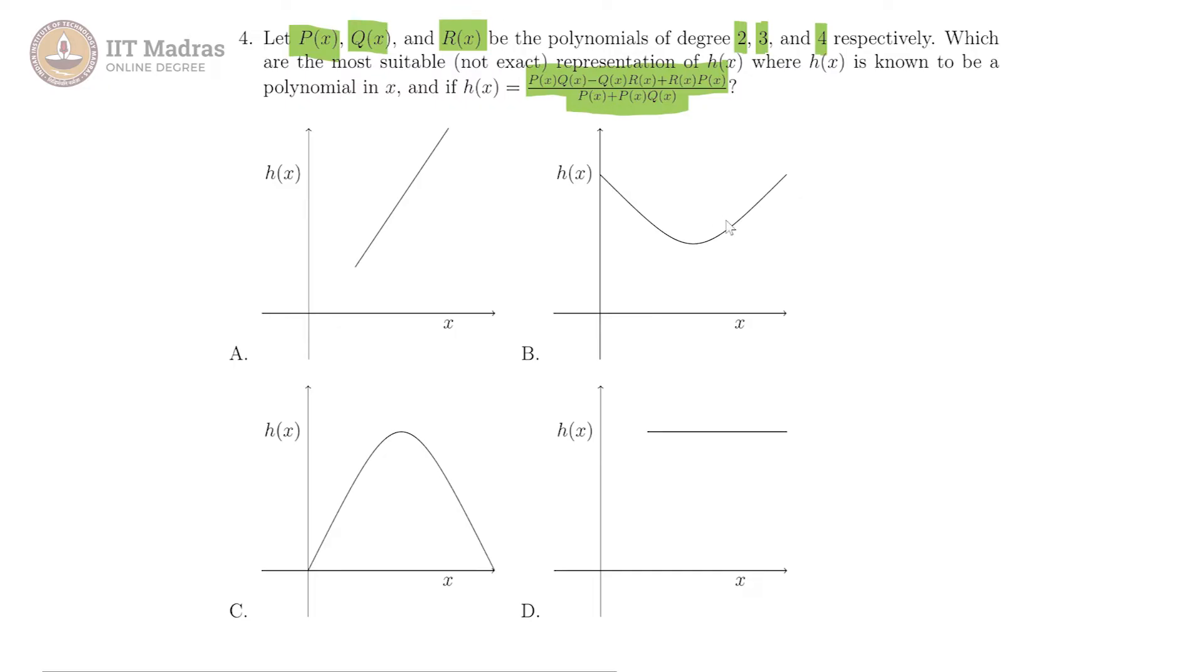What we need to do here is to identify the degree of the numerator and the denominator. Numerator degree p of x into q of x will give 2 plus 3 is equal to 5. That would be the degree of p of x into q of x, the degrees will add up and when we look at minus q of x into r of x, then again the degrees will add up which will give us 3 plus 4 is equal to 7.